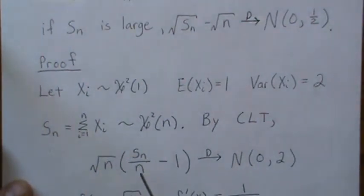We can subtract the mean, multiply by the square root of n, and then that approaches a normal distribution with mean 0 and variance 2.